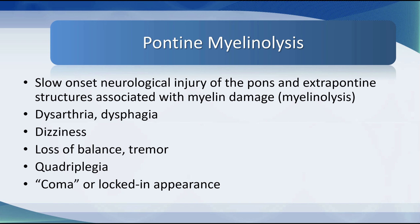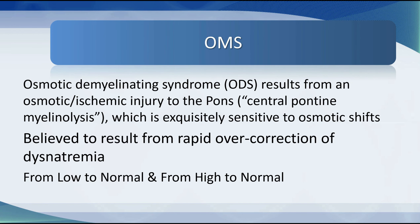Pontine myelinolysis — usually called central pontine myelinolysis — is a slow-onset neurological injury of the pons and extra-pontine structures associated with myelin damage. It's a demyelinating disease. Patients characteristically have dysarthria, dysphagia, dizziness, often loss of balance and tremor. Eventually they may become quadriplegic and apparently comatose or locked-in. It typically affects the center of the pons, but can also affect extra-pontine structures, and the pons is exquisitely sensitive to osmotic shifts in certain situations.